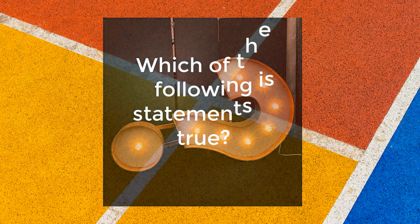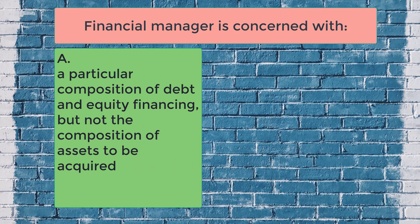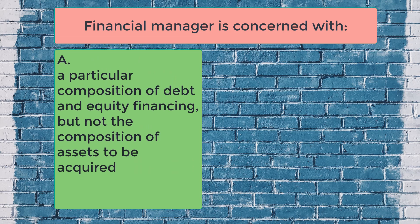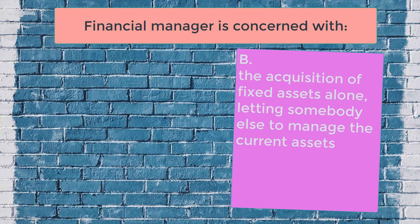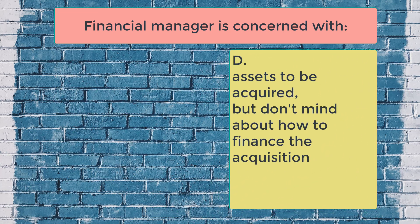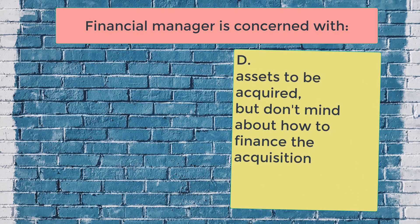Let's have this question. Which of the following statements is true? A. Financial manager is concerned with a particular composition of debt and equity financing, but not the composition of assets to be acquired. B. The acquisition of fixed assets alone, letting somebody else manage the current assets. C. The type of real and intangible assets, the term of the loan, and the financial position of the firm. Or D. Assets to be acquired but don't mind about how to finance the acquisition.